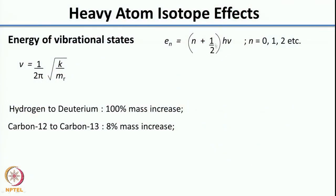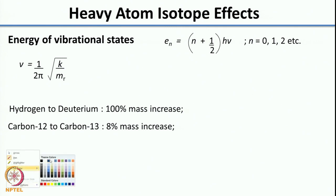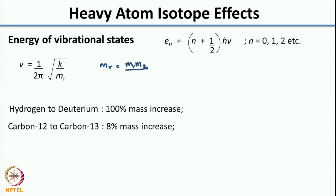The energy for these vibrational levels is given by En = (N + ½)hν. A large population of molecules would be in N = 0, called the zero-point energy. The frequency is given by ν = (1/2π)√(K/MR), where MR is the reduced mass — that is M1·M2 divided by M1 + M2 — where M1 and M2 correspond to the masses of the atoms that are attached.